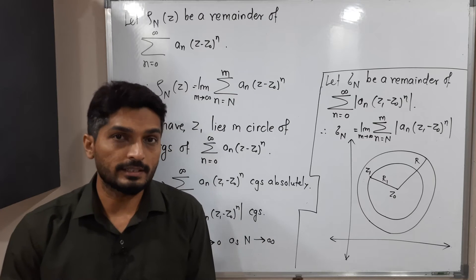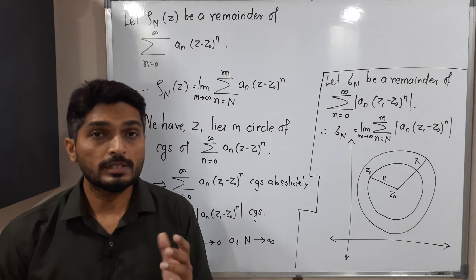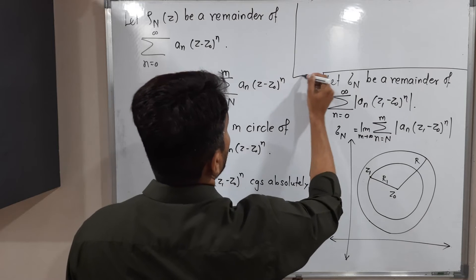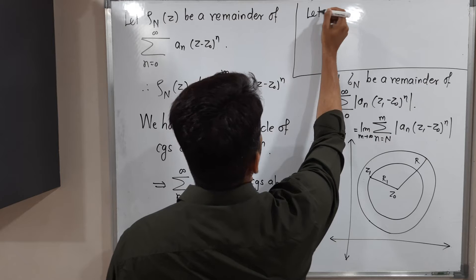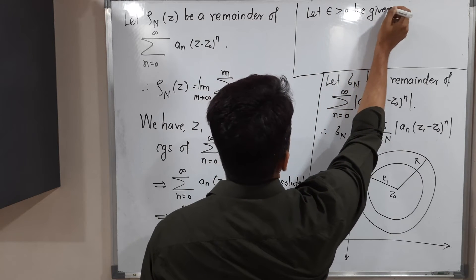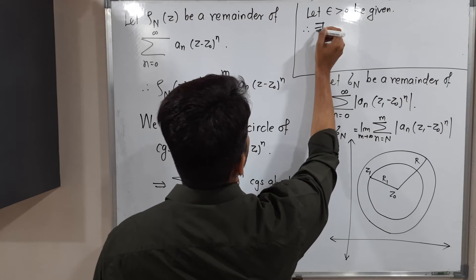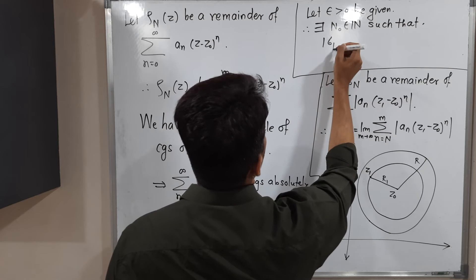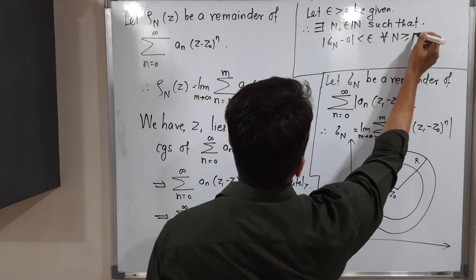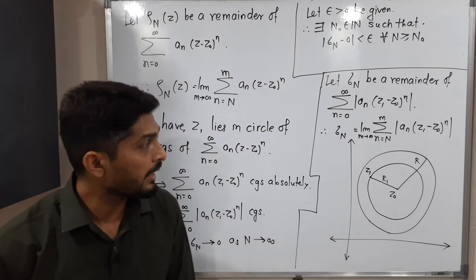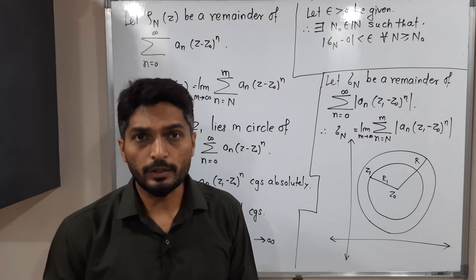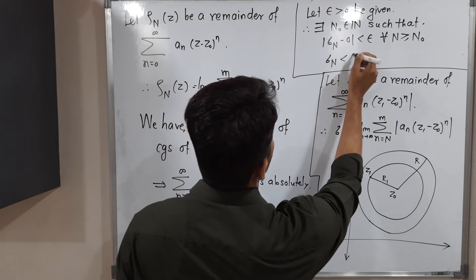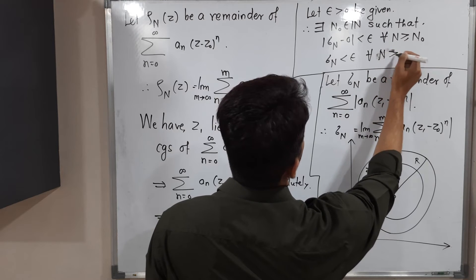We are going to use the epsilon definition of convergence. Let ε > 0 be given. By definition of convergence of σₙ → 0, there exists a capital N₀ belonging to the natural numbers such that |σₙ - 0| < ε for all n ≥ N₀. Since σₙ is always non-negative (modulus was already applied in its definition), this simplifies to σₙ < ε for all n ≥ N₀. Let us call this statement (1).